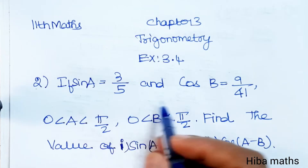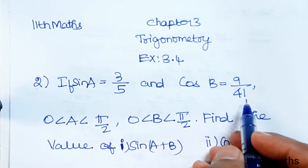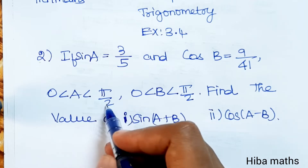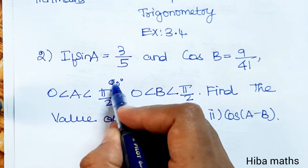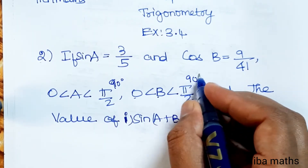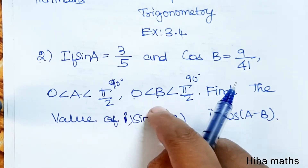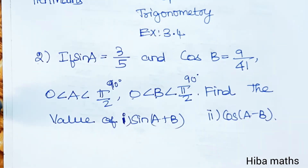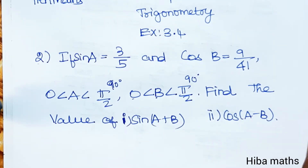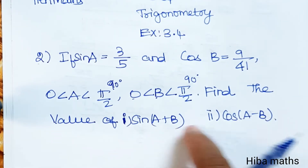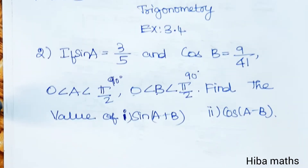If sin A is equal to 3 by 5 and cos B is equal to 9 by 41, where A is greater than 0 and less than pi by 2, that is 90 degrees, and B is greater than 0 and less than pi by 2, that is 90 degrees. Find the value of two questions: sin(A plus B) and cos(A minus B).